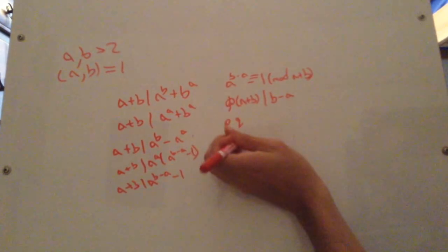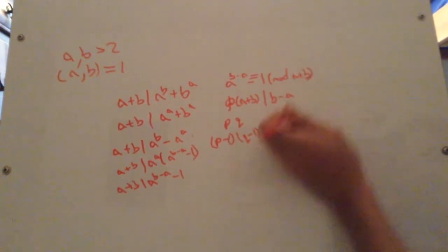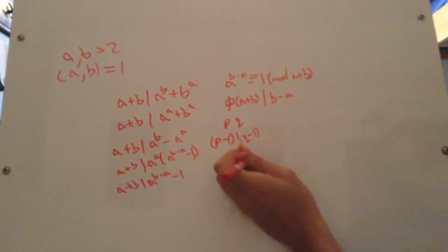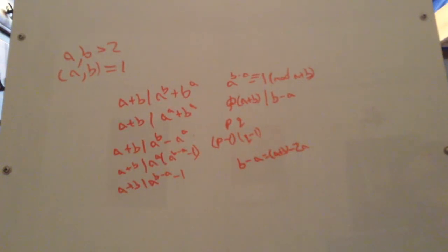And its totient will become divisible by p minus 1, since there's a p in it, q minus 1, and so on and so forth. But since these are odd, these are even, which means these are even. But if a plus b is odd, then b minus a equals a plus b, which is odd, minus 2a, which is even, must also be odd.